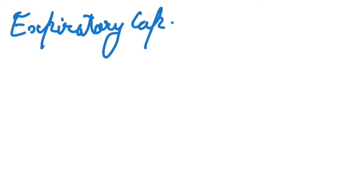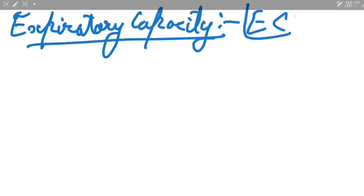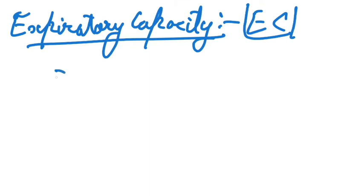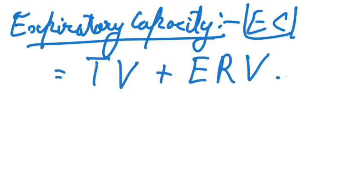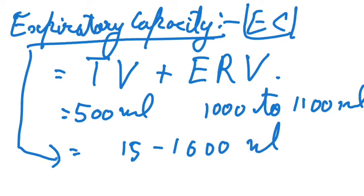Next we have expiratory capacity, which is the total volume of air a person can expire after a normal inspiration. This includes tidal volume plus expiratory reserve volume, giving around 1500 to 1600 ml.